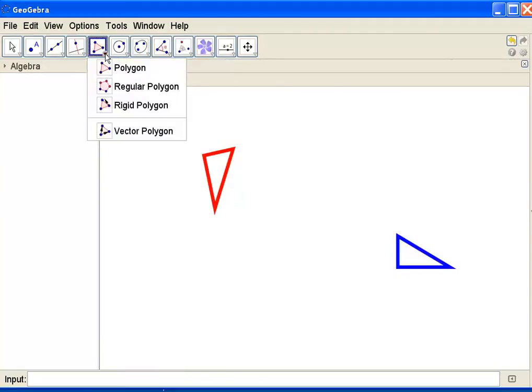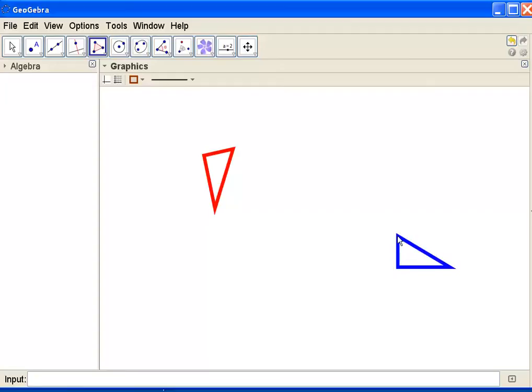The first thing I need to do is label my triangles so that I can talk about them. So I'm going to start here by making a polygon with GeoGebra, and I'm going to call this triangle ABC.